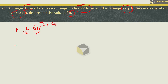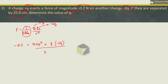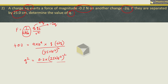Putting in the values, we get minus 0.2 equals 9×10⁹ into (+Q) into (minus 2Q) divided by (25×10⁻² meter)². The two charges multiply to give minus 2Q², and the negatives cancel. Rearranging, Q² is equal to 0.2 into (25×10⁻²)² divided by 9×10⁹ into 2.